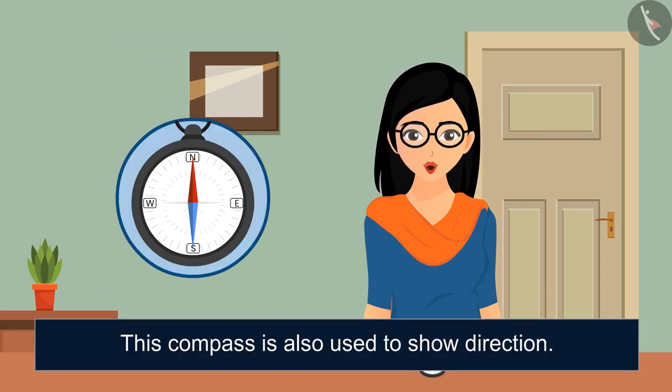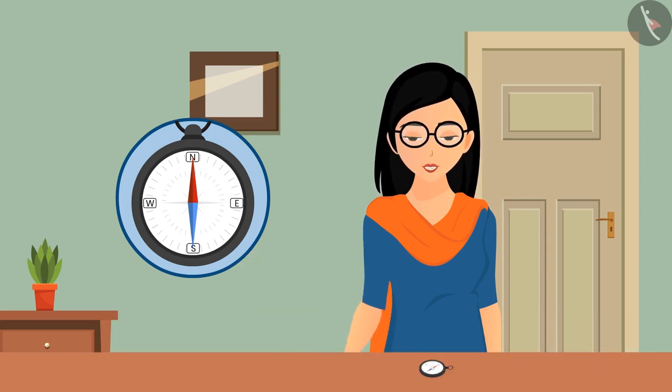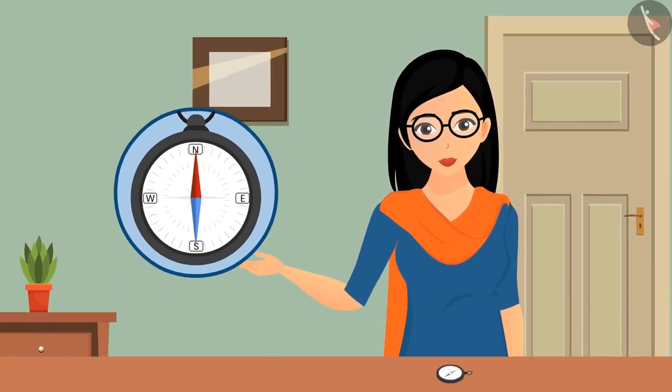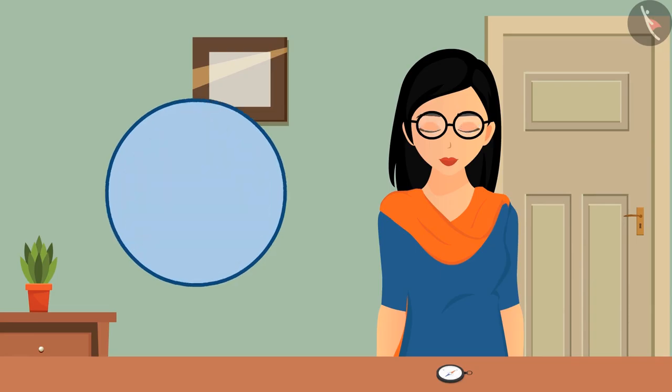Also, this compass is used to show direction. The needle of this magnet is just like an ordinary magnet which has north and south poles. The north pole is marked with red color and the needle on this point points towards the geographical north pole. As we said that this needle is a magnet, what would happen if a magnet was brought near this compass?